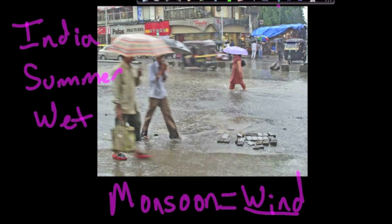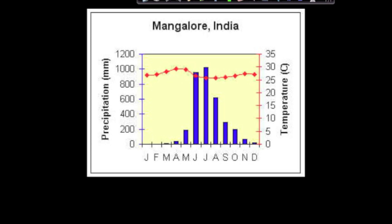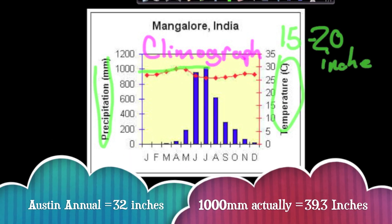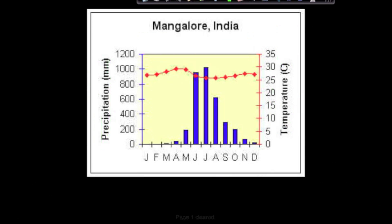It happens pretty much every summer in India. Here is Mangalore, India, shown on a climograph. A climograph has to do with temperature and precipitation. You can see that in the summer, Mangalore India had about a thousand millimeters of rain, which is roughly 15 to 20 inches.